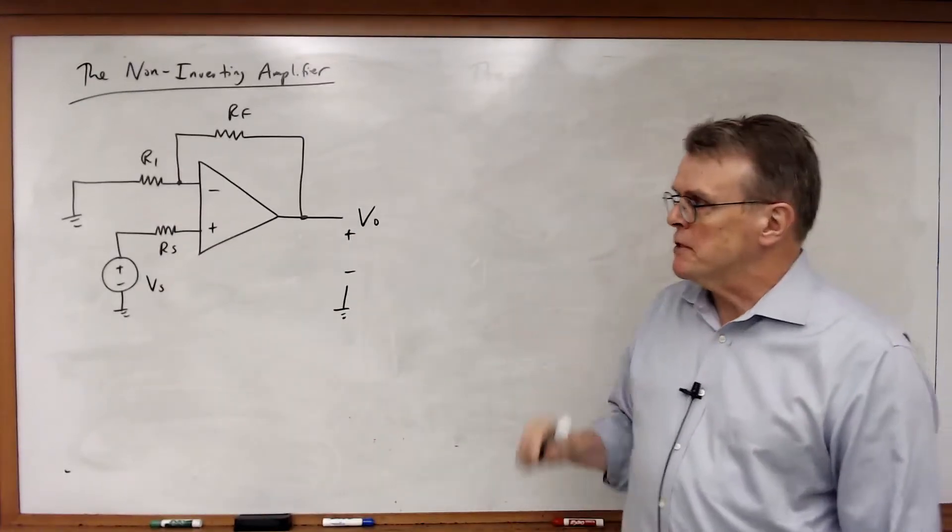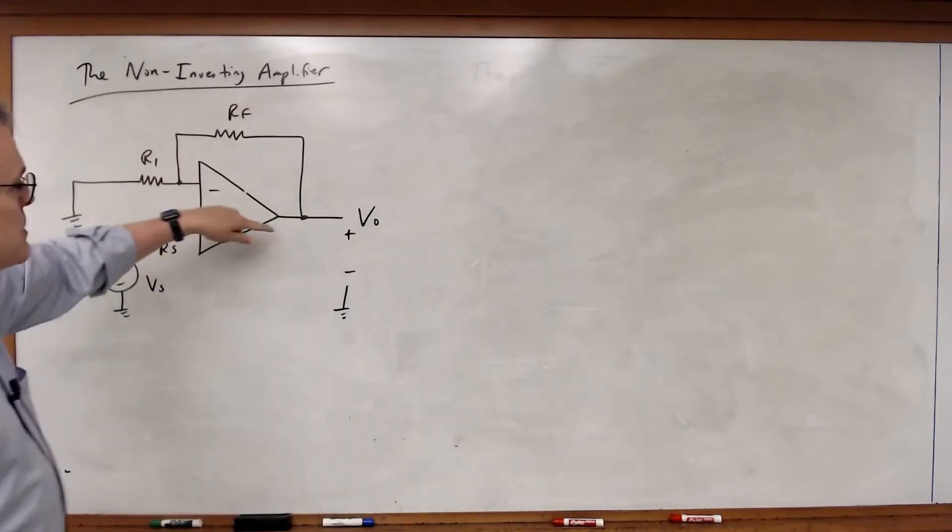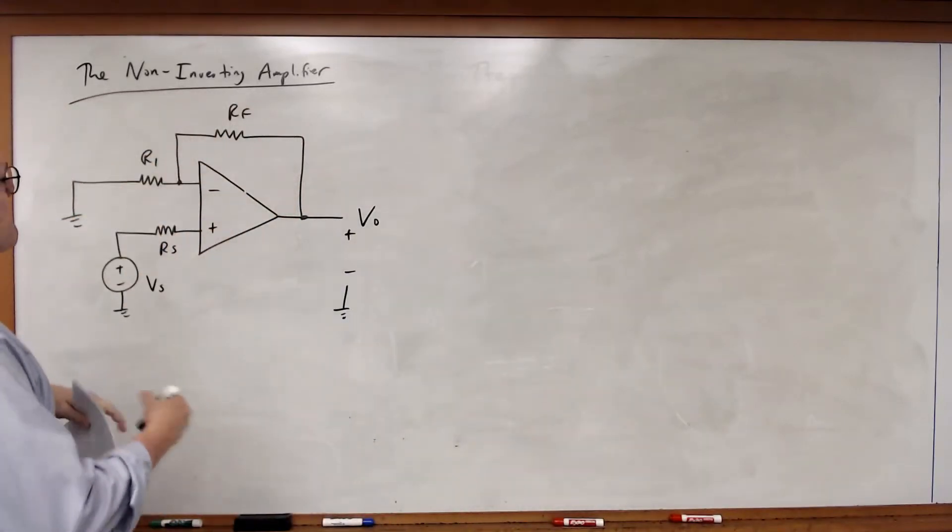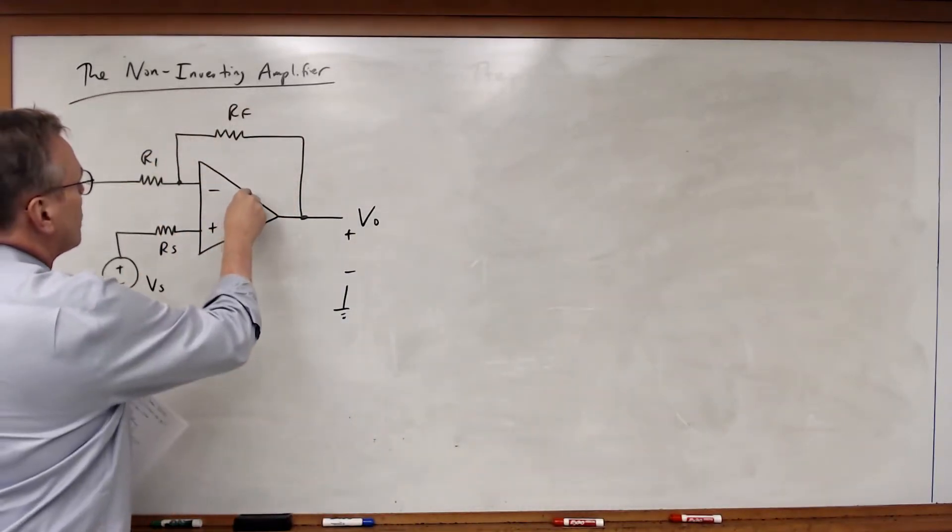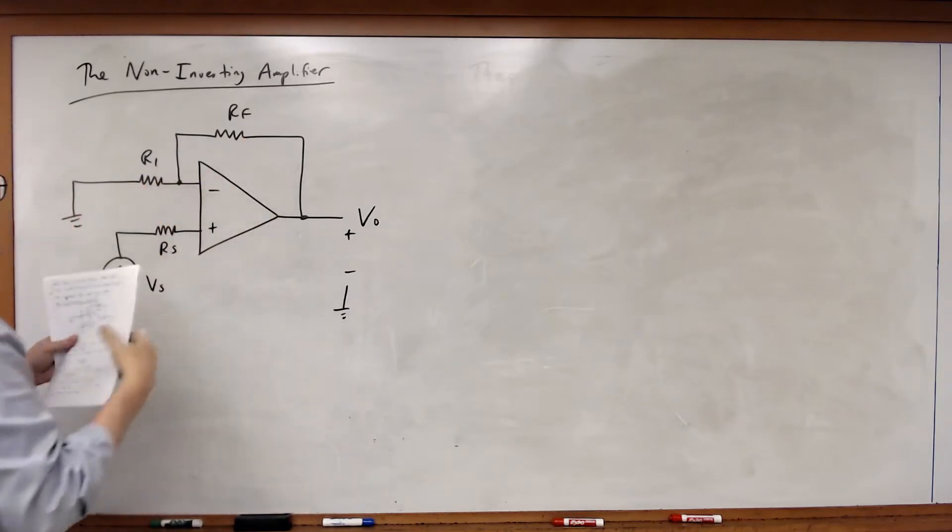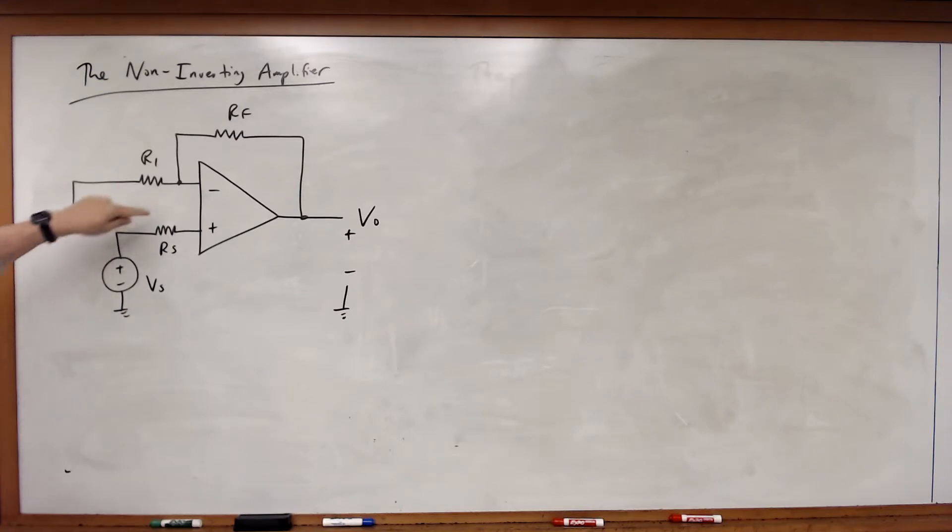Now this is an interesting circuit. Notice what we've done here. You still see negative feedback, except in this case we now have RF, we've got an R1 resistor connected to ground, and our VS and RS source and resistor have now been moved to the non-inverting input terminal.